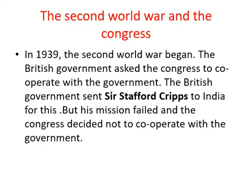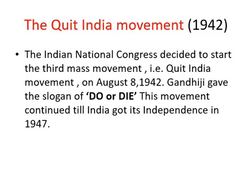1939 mein jab Second World War hua, tab British government ne wapas se Congress se help maangi ki wo cooperate karein government ke saath. Unhone apna ek person bhi bheja India mein, lekin unka ye mission fail ho gaya kyunki Congress ne decide kiya ki is baar wo government ke saath cooperate nahi karengi World War mein.